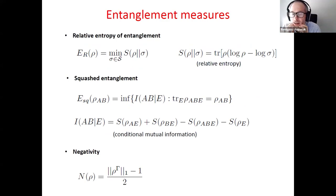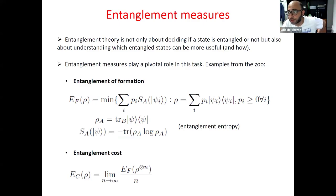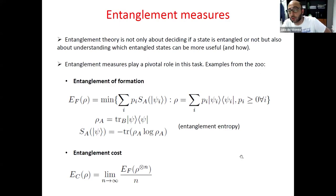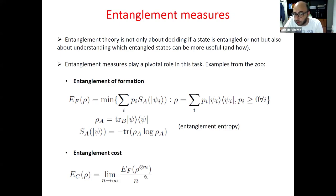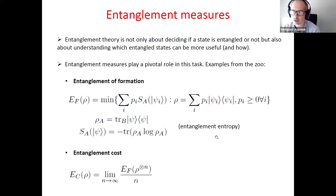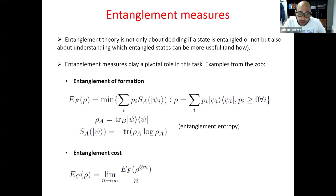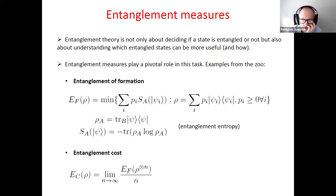A question arises: concerning this regularization, for any entanglement measure can you do that? You might have the problem in principle that this limit does not exist, but for this particular measure it has been shown that the limit exists and happens to equal the entanglement cost. As for whether there is a reasonable entanglement measure for which the regularized version does not exist — that is a good question, and I'm not even sure there is a known example. Please interrupt me anytime if you have questions.